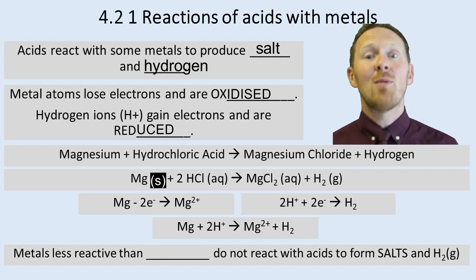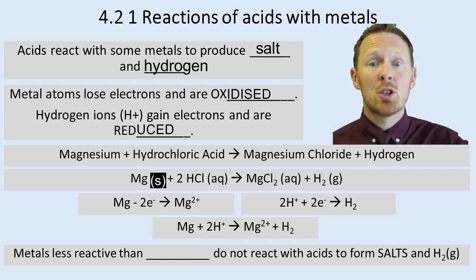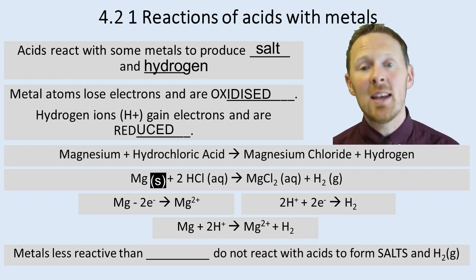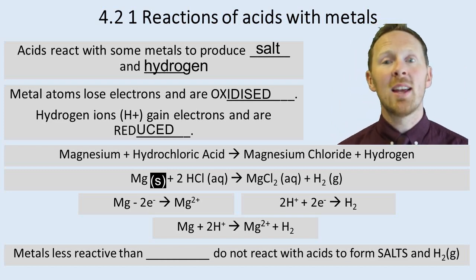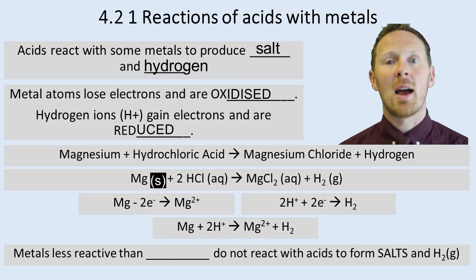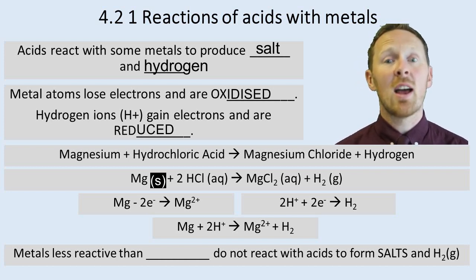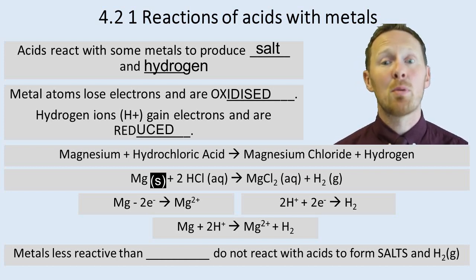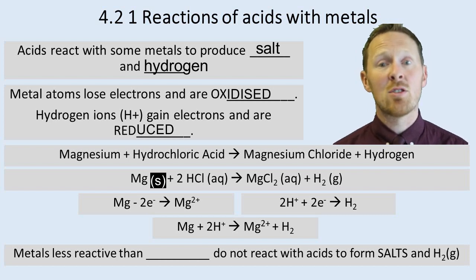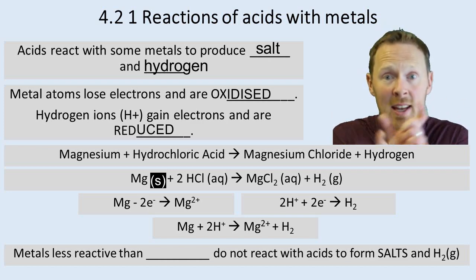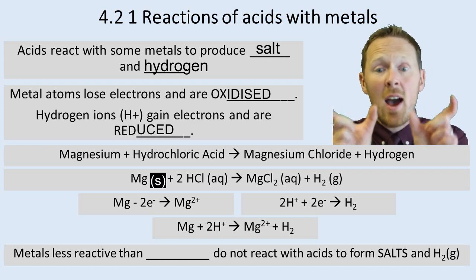If you take that reaction and break it into the reduction part and the oxidation part, we can see that the magnesium is losing electrons. Magnesium atoms lose two electrons to form magnesium ions, Mg2+, and the hydrogen ions (the protons) gain electrons to form hydrogen gas. These are two equations that add together, so they are called half equations.